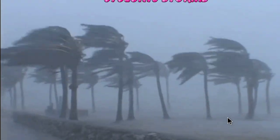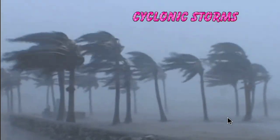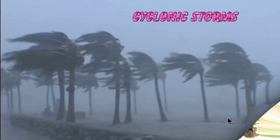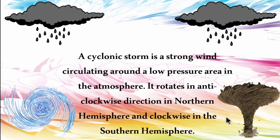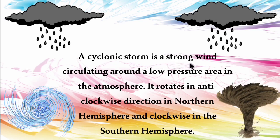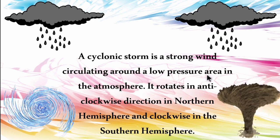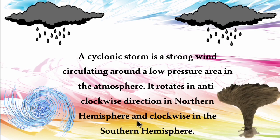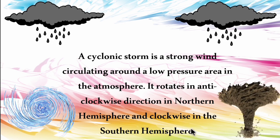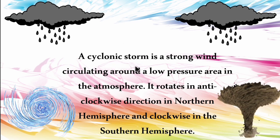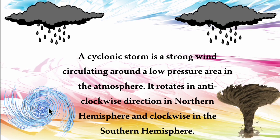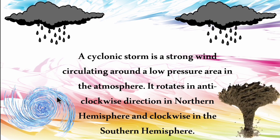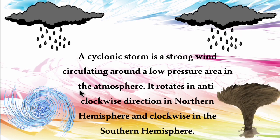The third major hazard in India is cyclonic storm. A cyclonic storm is a strong wind circulating around a low-pressure area in the atmosphere. It rotates in an anticlockwise direction in the northern hemisphere and clockwise direction in the southern hemisphere.